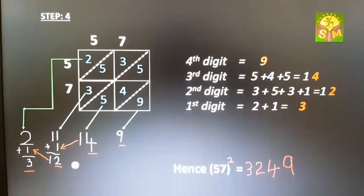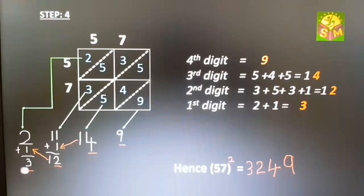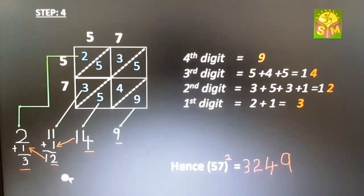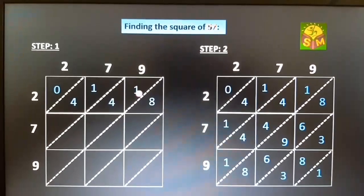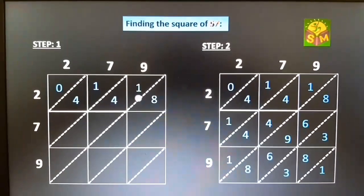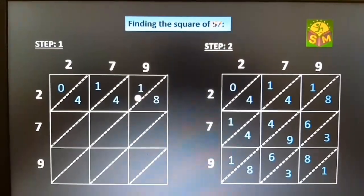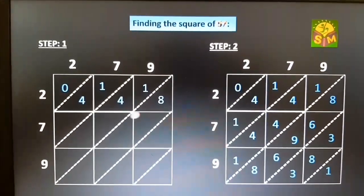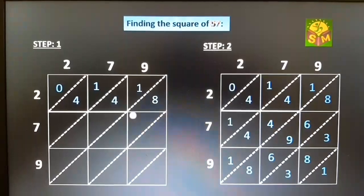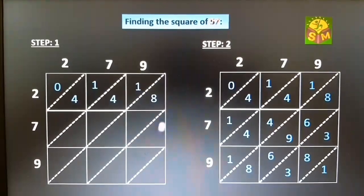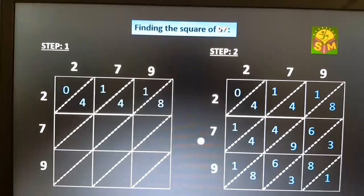The number obtained is the square of the given number. Diagonal method for a three-digit number: If the given number contains three digits, then divide the square into nine small squares. This can be calculated as shown in the figure.